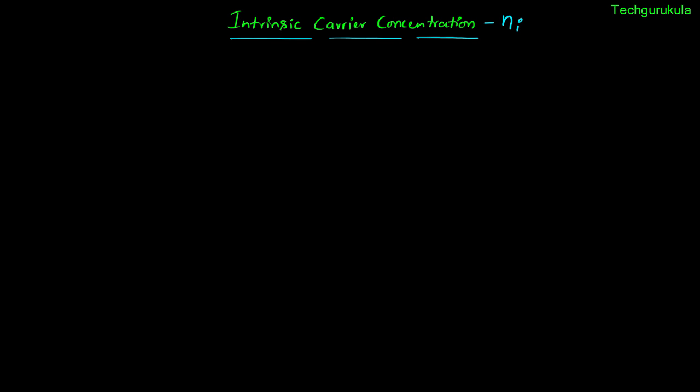We have defined intrinsic carrier concentration while discussing intrinsic semiconductors in our previous videos. In this video we're going to understand Ni in more detail — the mathematical equation for it and what Ni depends on. The number of electrons per unit volume (per centimeter cube) is called the electron concentration in the conduction band, denoted N. Similarly, the number of holes per centimeter cube in the valence band is given by P.